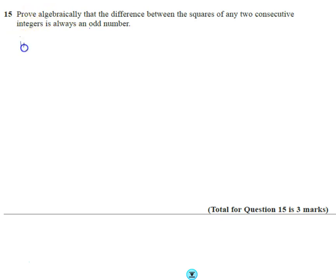So the first thing to do, write down the integers. If they're just any two consecutive, it doesn't matter what we start with. Let's just start with n. We know the consecutive integer must be n plus 1.